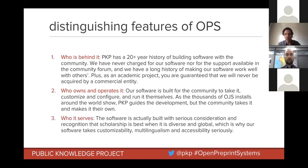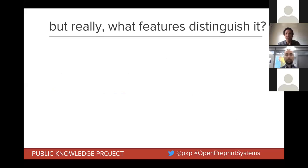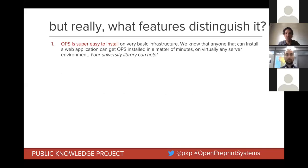The third thing that distinguishes PKP software, and that will distinguish OPS as well, is who it's actually serving. The software is built with very serious consideration and recognition that scholarship is best when it's diverse and global. We make sure our software can take into account different ways of operating, can be configured in different ways to serve different needs. Multilingualism has been a very serious consideration in how it's built, and accessibility is also something we've taken very seriously at PKP.